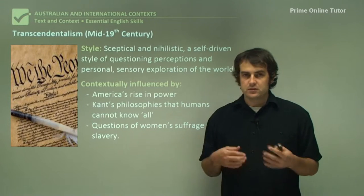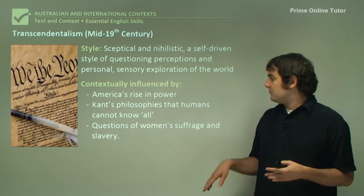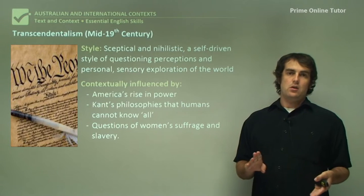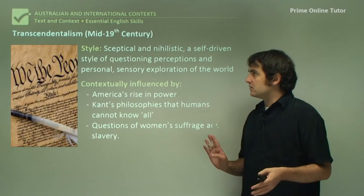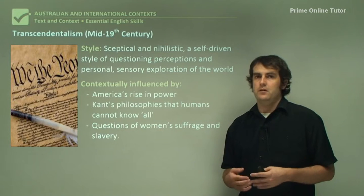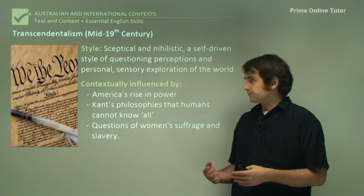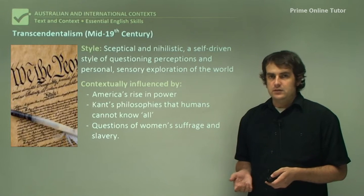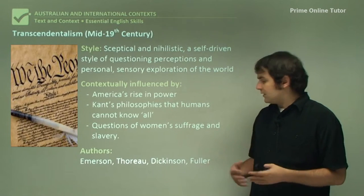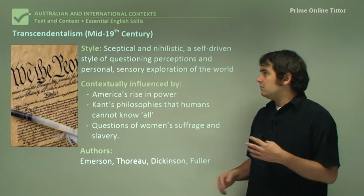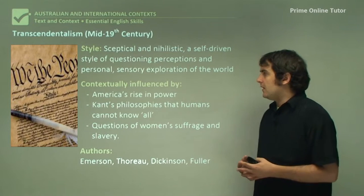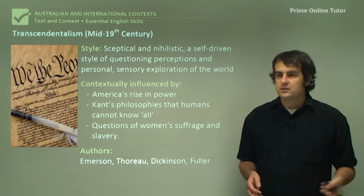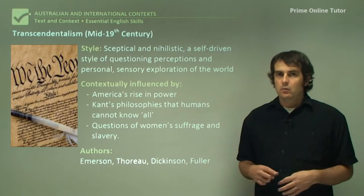Transcendentalism was a little ahead of its time, looking quite deeply at the human rights of women and African-American slaves. It was a short-lived movement that informed many values of coming eras, yet is pretty much lost to history. Authors include Emerson, Thoreau, Emily Dickinson, and Fuller. Basically the movement died with these people — the scepticism and anti-institutional attitude really didn't carry on once these authors were unable to continue penning works representing those ideas.